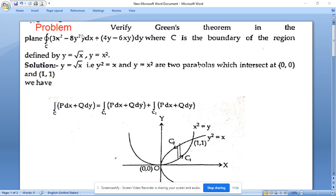Hello students, now I am going to discuss the most important sum in Green's theorem. The problem is verify Green's theorem in the plane integral over C: 3x² - 8y² dx plus 4y - 6xy dy. This is the boundary of the region defined by y = √x and y = x².